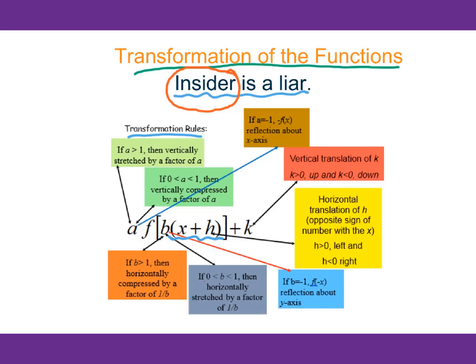So when b is between 0 and 1, we horizontally stretch by a factor of 1 over b. When b is greater than 1, we horizontally compress by a factor of 1 over b. When h is positive, you need to move to the left. When h is negative, you need to move to the right.